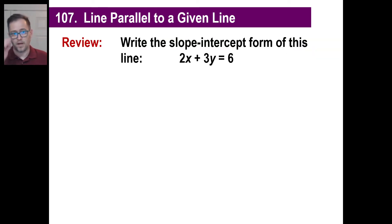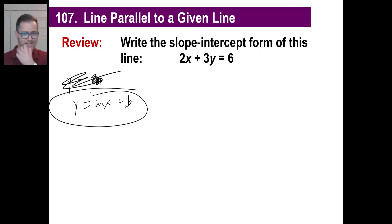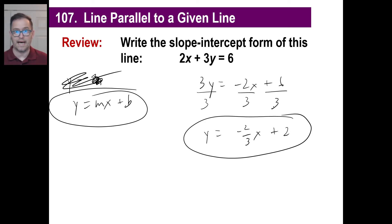All right, that's what we need to know. Here's what we're going to do today — let's do one more thing. Write the slope intercept form of that line. Slope intercept, which means our normal y equals mx plus b. I'm leaving the 3y on the left, moving this over: that equals negative 2x plus 6. Dividing everything by 3, I get y equals negative 2 thirds x plus 2, and that is in slope intercept form.